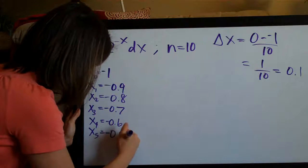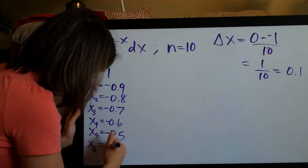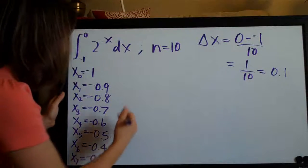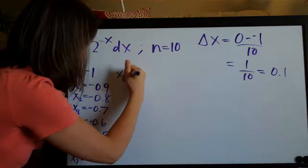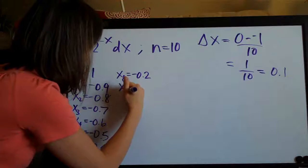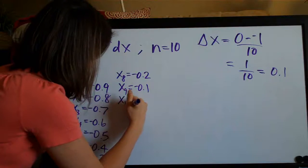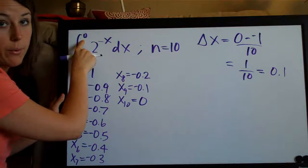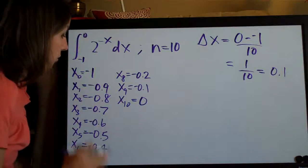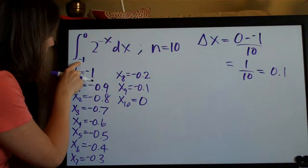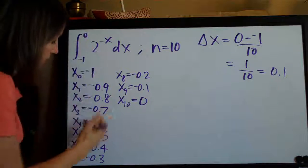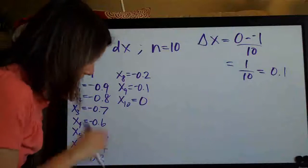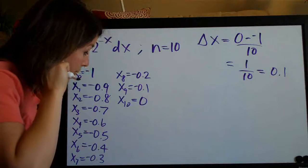You can see the pattern pretty quickly. Continuing: x7 is negative 0.3, x8 is negative 0.2, and then x10 is finally 0, where we stop because we've reached the right-hand side of our range — the top number on our integral. The first number is the bottom number on the integral, the last number is the top, and everything in between is in divisions of 0.1, which is our delta x.